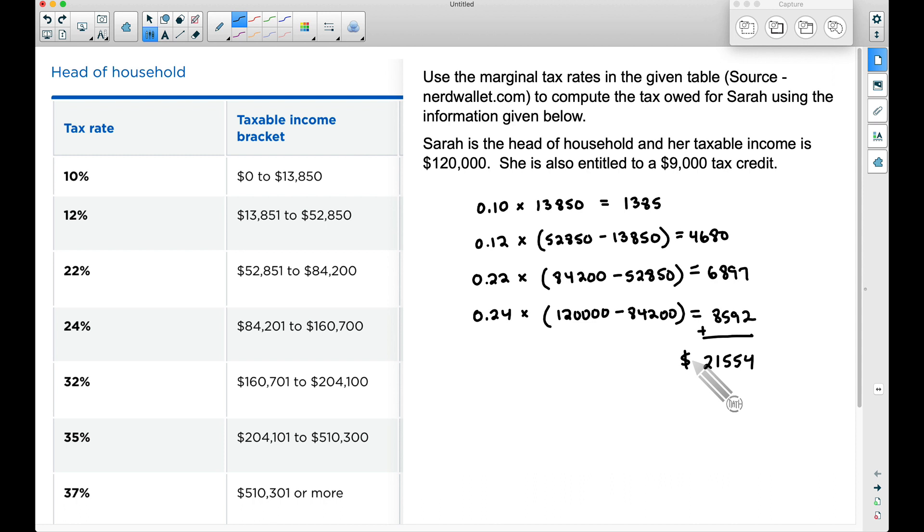Now this is the amount of tax owed if you are not entitled to a tax credit. But Sarah is—Sarah is entitled to a $9,000 tax credit, and the word credit is important. Once you find the tax owed, if you have a tax credit, you can subtract that tax credit from the total amount of tax owed. So let's come in here and let's subtract the $9,000.